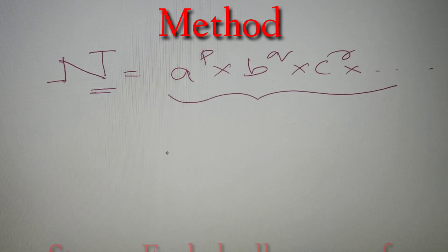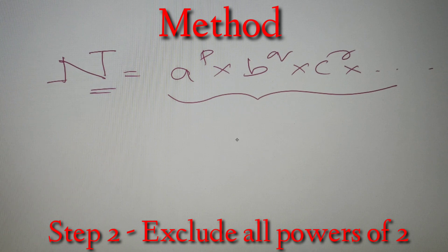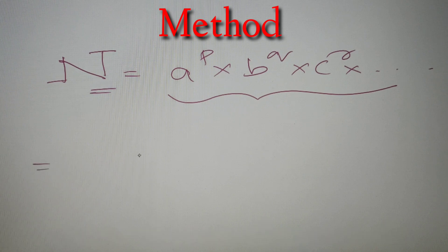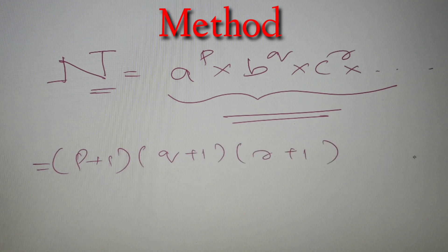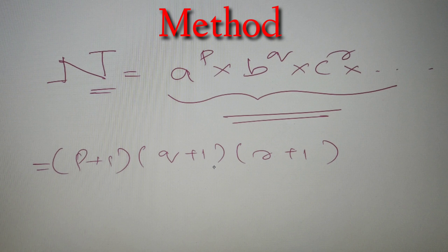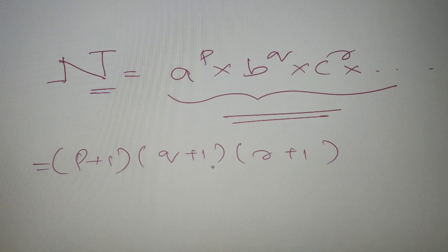Once we have the prime factorization, we simply exclude all the powers of 2 from that given number. After excluding all the powers of 2, we apply the formula for finding the number of factors, which is (p+1) × (q+1) × (r+1) and so on, where p, q, and r are the powers of the prime numbers. If you have any doubts, let's solve some examples which will clear them up.